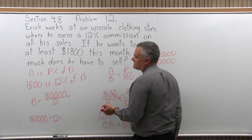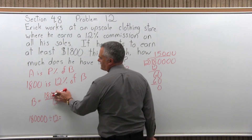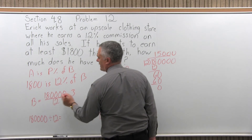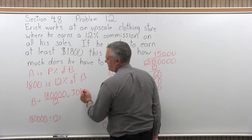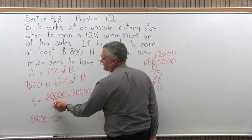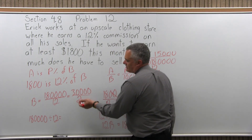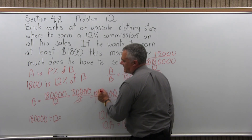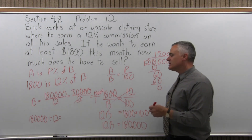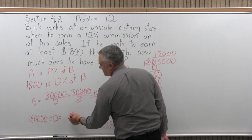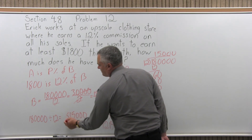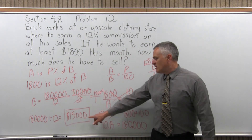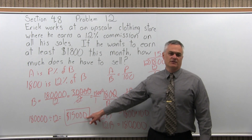You can also get that by reducing. Notice 18 and 12 both reduce nicely by 6: 6 goes into 18 three times, giving 30,000 in the numerator; 6 goes into 12 twice, giving 2 in the denominator. So I have 30,000 over 2. They're both even — half of 30,000 is 15,000, half of 2 is 1 — same answer. The easiest method is the calculator; long division is toughest; reducing is in between. The answer is: if Eric wants to earn at least $1,800 in commission, the minimum is $15,000 in sales — he has to sell at least $15,000.